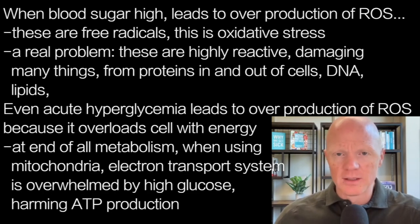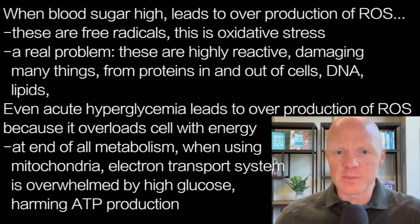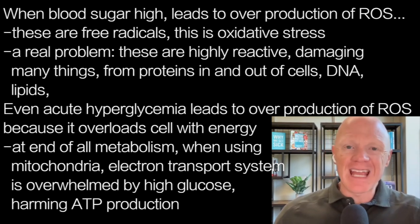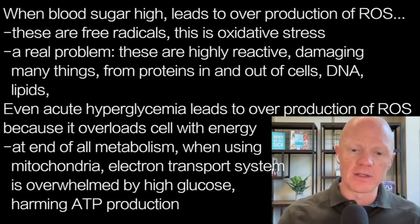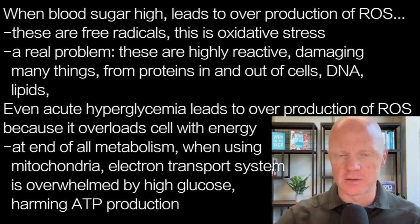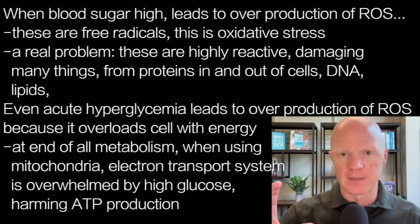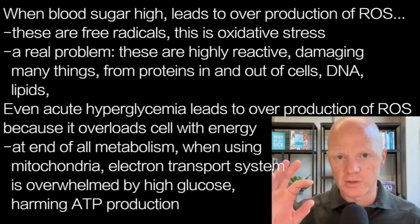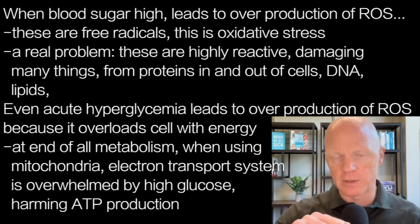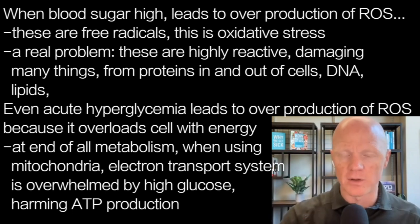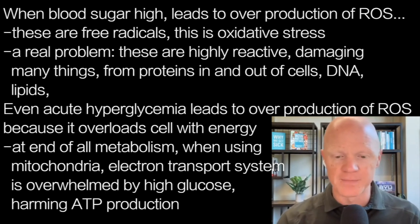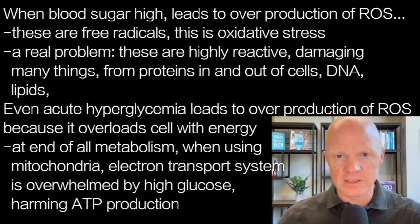Even acutely, hyperglycemia leads to an overproduction of reactive oxygen species because it overloads the cell with energy. At the end of all nutrient metabolism — whether we're breaking down fats, ketones, lactate, or glucose — if it uses the mitochondria, which all of those can do, there's something called the electron transport system. Some people call it the electron transport chain; I call it a system, which I think is a more accurate term.